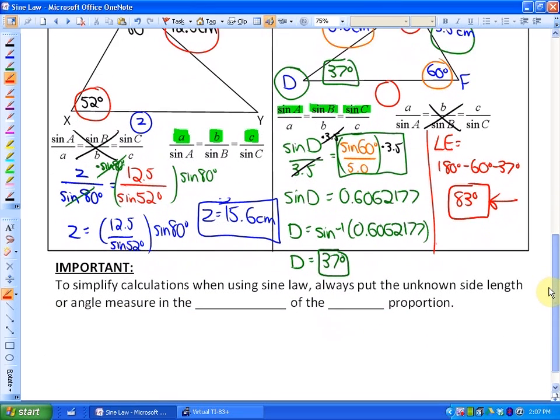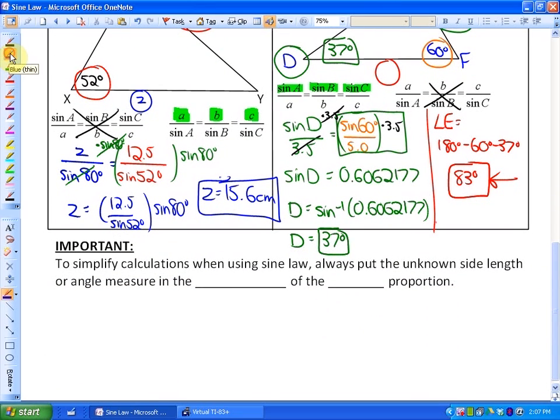So just an important note here is to simplify calculations when you are using the sine law, always put the unknown side length or angle measure in the numerator. This simplifies calculations of the first proportion, which is what I did here. Always in the numerator of your first proportion if it's a side length, or numerator of your first proportion if it's an angle. That is all.